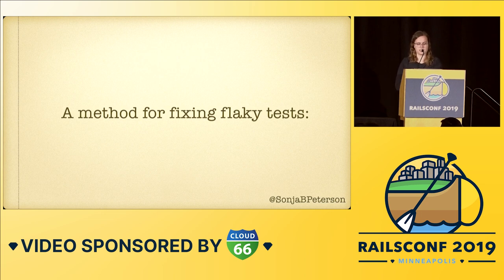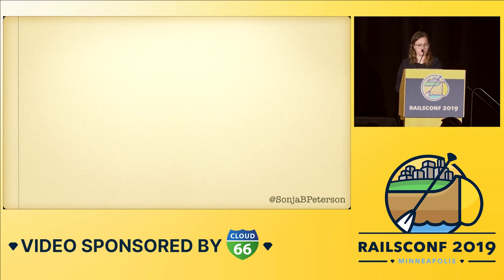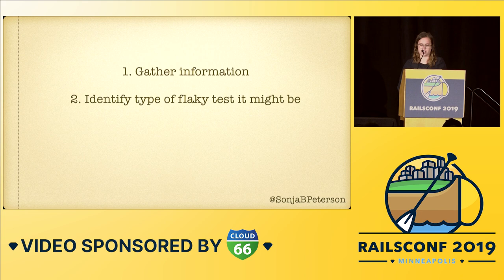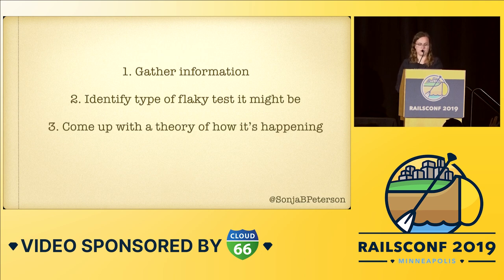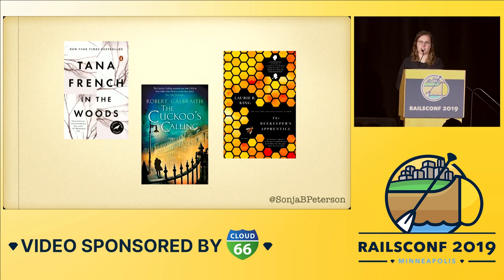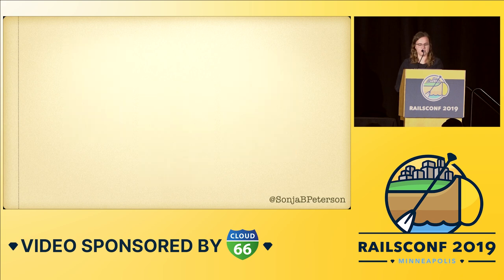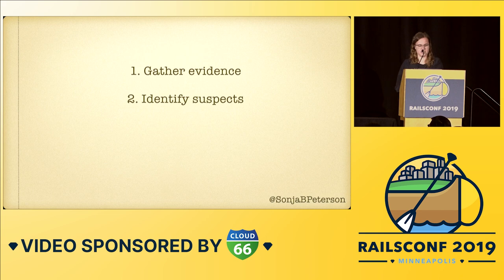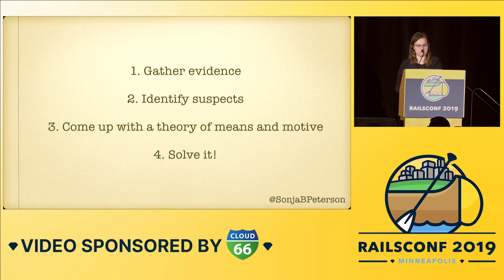The real breakthrough for me was when I came up with a method. Instead of trying things randomly, I started by gathering all the information I could about the flaky test and the times it failed. Then I used that information to fit it into one of five main categories of flaky tests. Based on that, I came up with a theory of what might be happening, and then I implemented my fix. At the same time, I was on a mystery novel binge, and it struck me that fixing a flaky test felt just like a detective solving a mystery — gathering evidence, identifying suspects, forming a theory of means and motive, and then solving it. Thinking about it that way made it much more enjoyable and kind of a fun challenge instead of a frustrating and tedious problem.